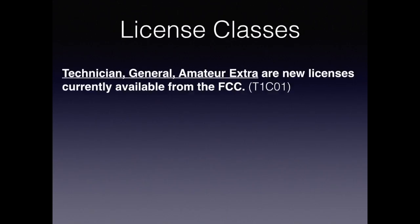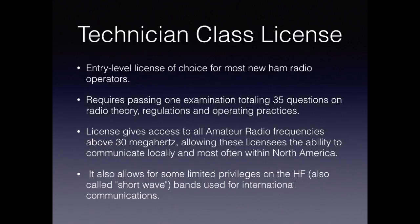There are three types of licenses currently available from the FCC: technician or the entry level, the general, and the amateur extra license. The entry level is the choice for most new ham operators. It requires passing an examination of 35 questions on radio theory, regulations, and operating practices. The license gives access to all amateur radio frequencies above 30 megahertz, allowing communication locally and most often within North America. It also allows some limited privileges on the HF or high frequency bands, also known as shortwave, which is used for international communications.